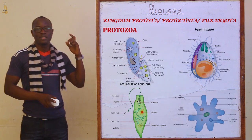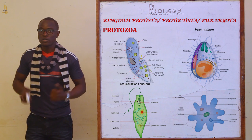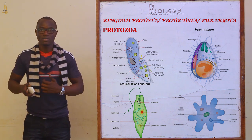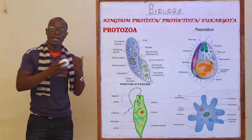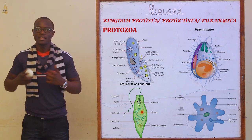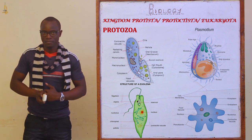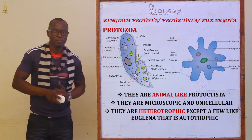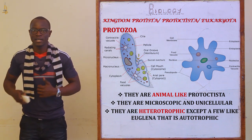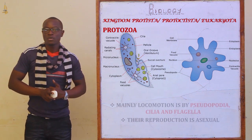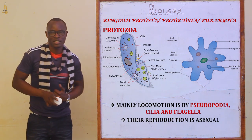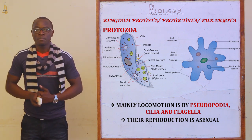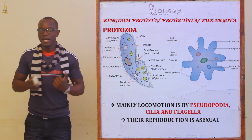Now let's look at the protozoa. For the protozoa, we see that they are animal-like Protoctista, whereas for the algae, we saw that they are plant-like Protoctista. They are also microscopic and unicellular, and they are also heterotrophic, except a few which are mainly autotrophic. The main locomotory structures are pseudopodia, cilia, and flagella. They also reproduce asexually as we have seen for the algae.